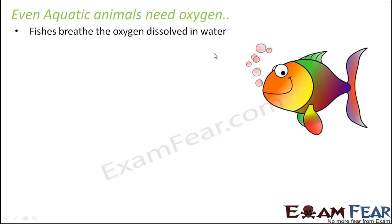Fishes breathe the oxygen that is dissolved in water. In water, we have oxygen which is dissolved in it, and water anyways contains oxygen. So oxygen is present inside water, and fishes breathe that dissolved oxygen. Since they have to take in oxygen from water, they have specialized organs called gills, and these gills help them take in oxygen from water.